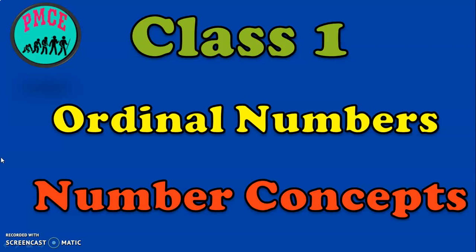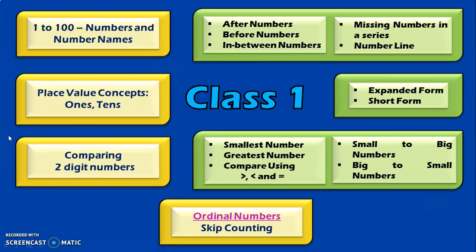Ordinal numbers comes under the number concepts. Let us see what are all the learning outcomes in class 1 under number concepts. The first learning outcome is 1 to 100 numbers and number names in series. There are topics such as after numbers, before numbers, between numbers, missing numbers in a series, and number line concepts.